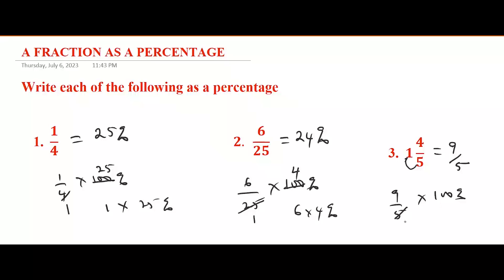Five goes into five once, five goes into 100 twenty times, so we have 9 times 20 percent, which gives 180 percent. So 1 and 4/5 is the same as 180 percent.